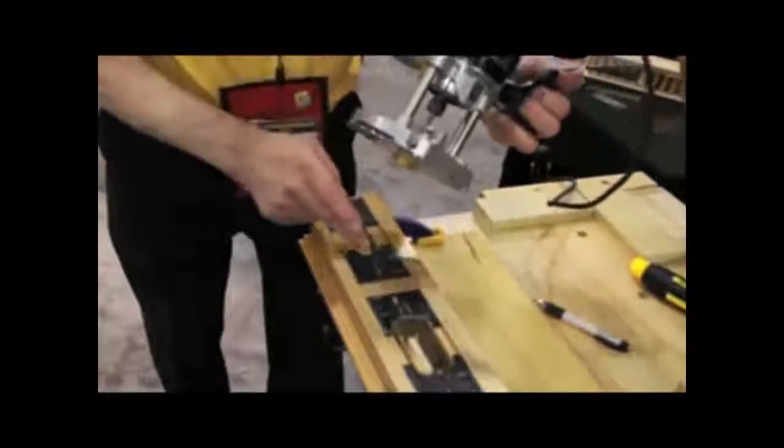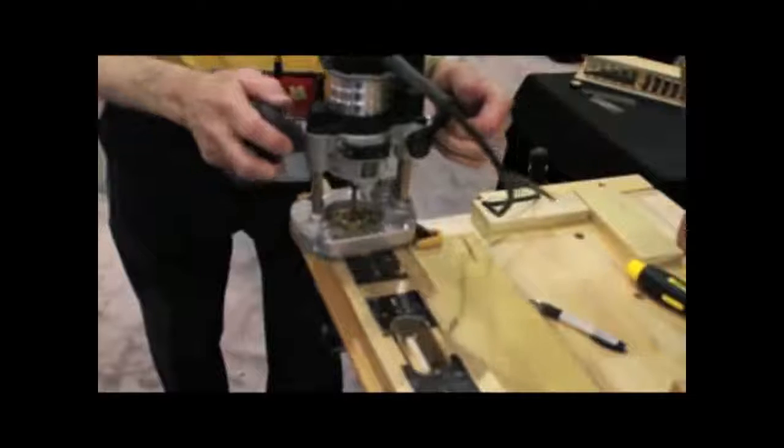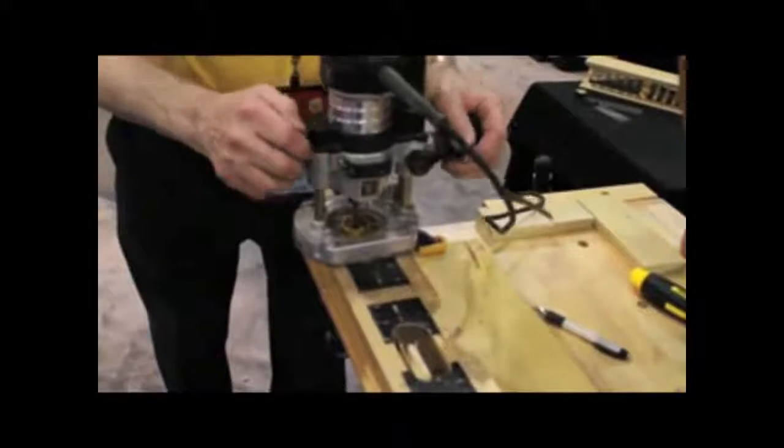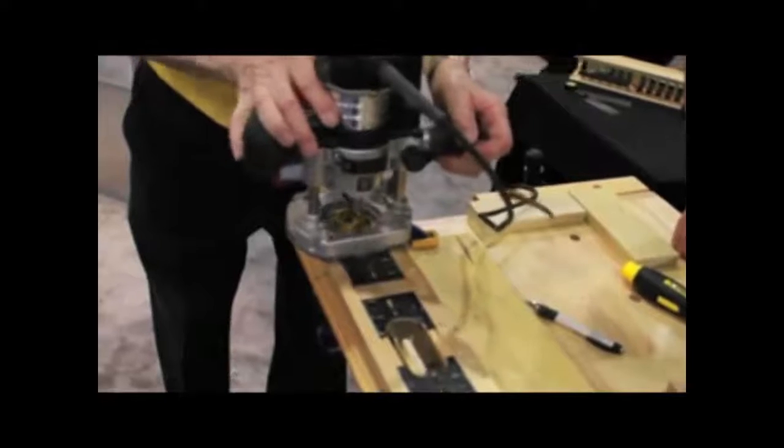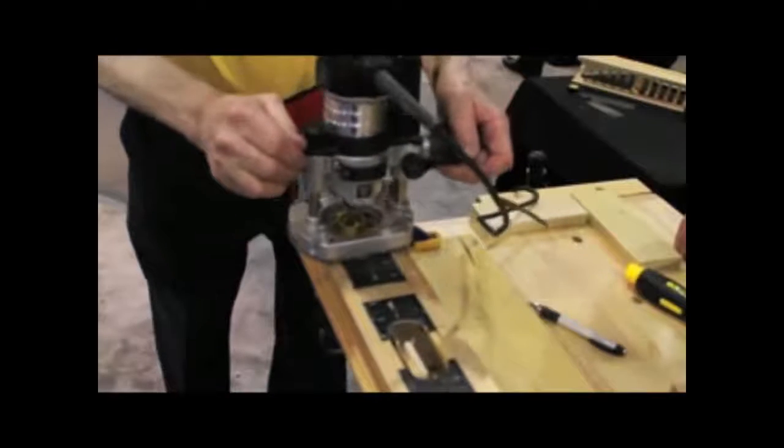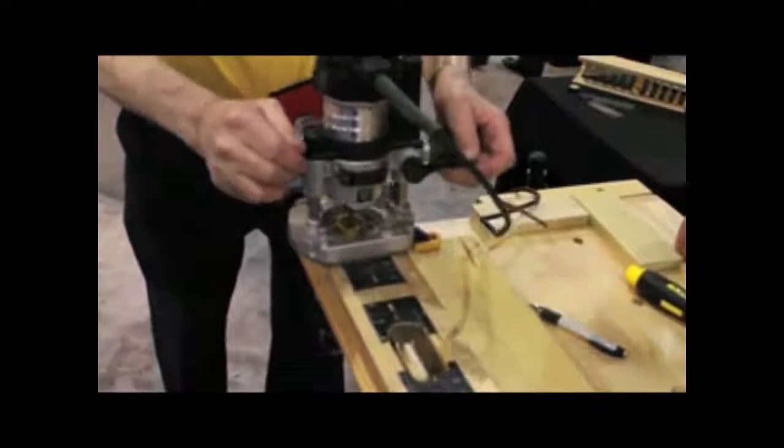This is the mortise end. The jig will then, the guide will go into the template. And instead of going around, we'll do what we call overlapping plunges. To depth.